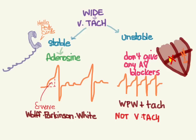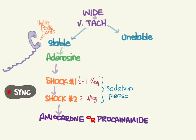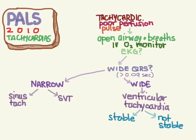If adenosine doesn't work for stable VTach, perform synchronized cardioversion: first shock at 0.5 to 1 joule/kg, and if that doesn't work, 2 joules/kg — remembering to sedate the patient. After two shocks, try amiodarone or procainamide with the same earlier warnings. If the patient is unstable, skip adenosine entirely and go straight to shock — 0.5 to 1 joule/kg, then 2 joules/kg — sedating them if possible, though if they're unresponsive sedation may not be needed.